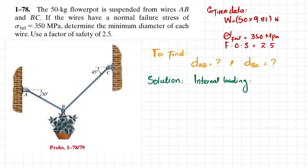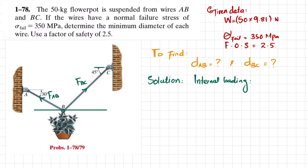The internal loading — the normal stress developed in cables AB and BC — can be determined by considering the equilibrium condition at point B. Let the force in wire AB be F_AB and force in wire BC be F_BC. Drawing a horizontal line, you can see the angle for BC is 45 degrees and the angle for AB is 30 degrees. The weight of the flower pot acting downward is 50 multiplied by 9.81 newtons.